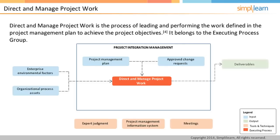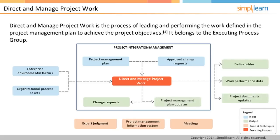There are several outputs from this process. Project deliverables are produced. As the deliverables are being produced, there would also be data related to project performance, such as what was done, how long did it take, how much did it actually cost, etc. Along with these key outputs, new change requests may emerge. This could be because during the execution phase, the team or the stakeholders may realize that what is being produced is not meeting the expectations and that something else may need to be done. In the process, project documents and project management plan get updated.